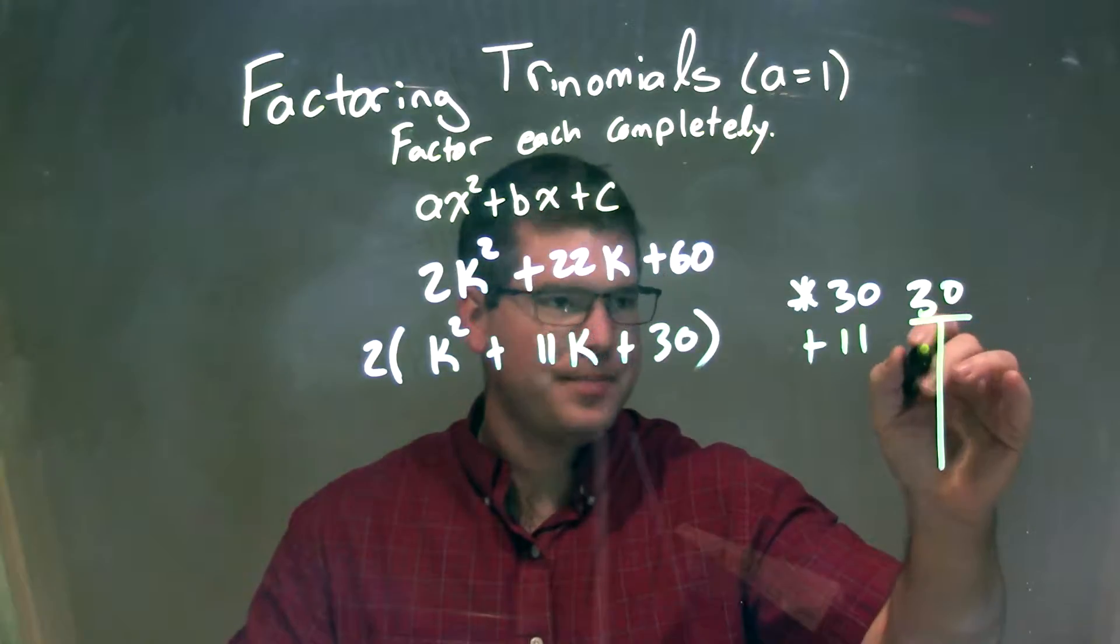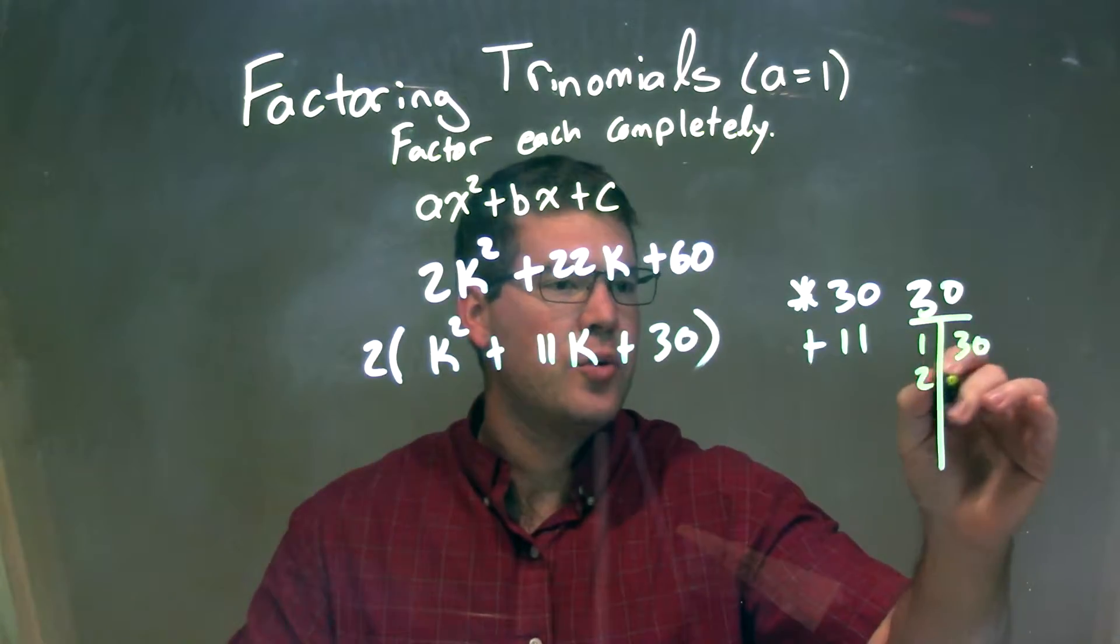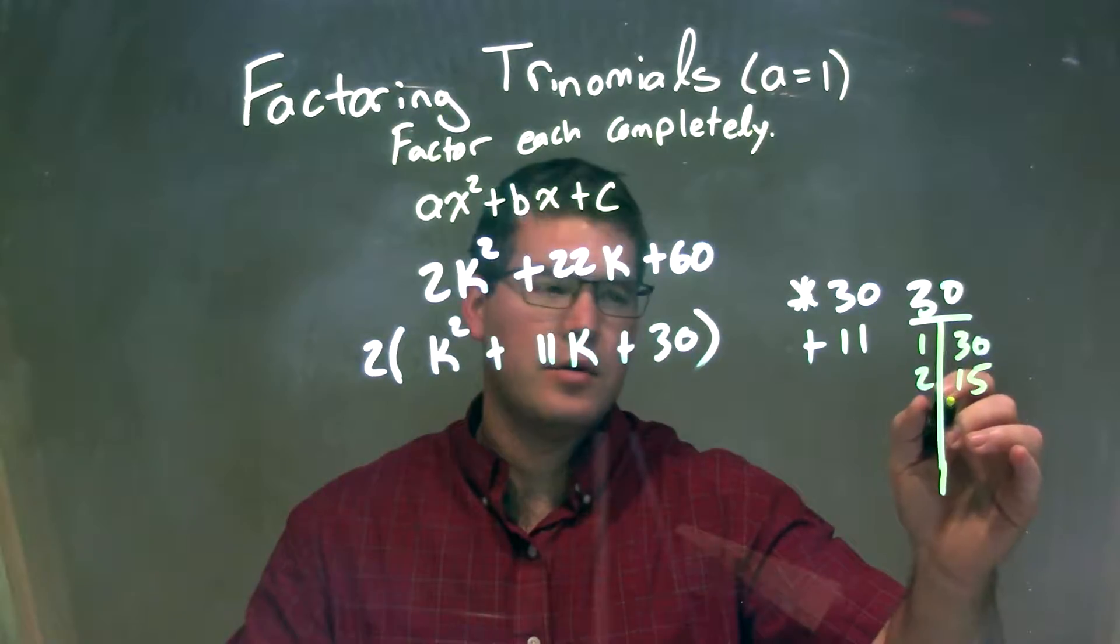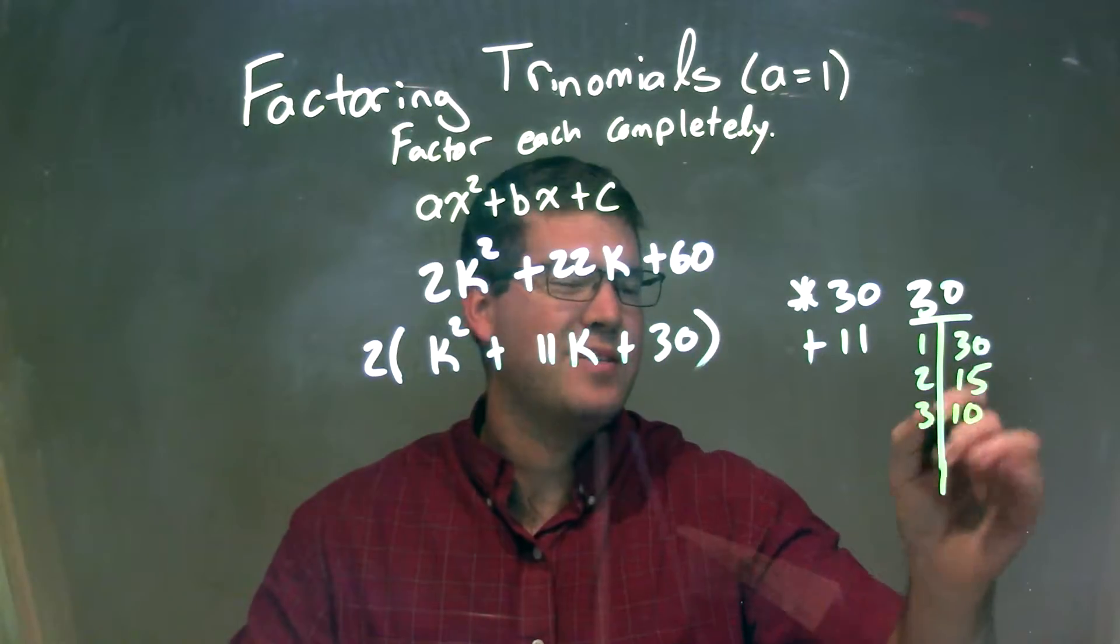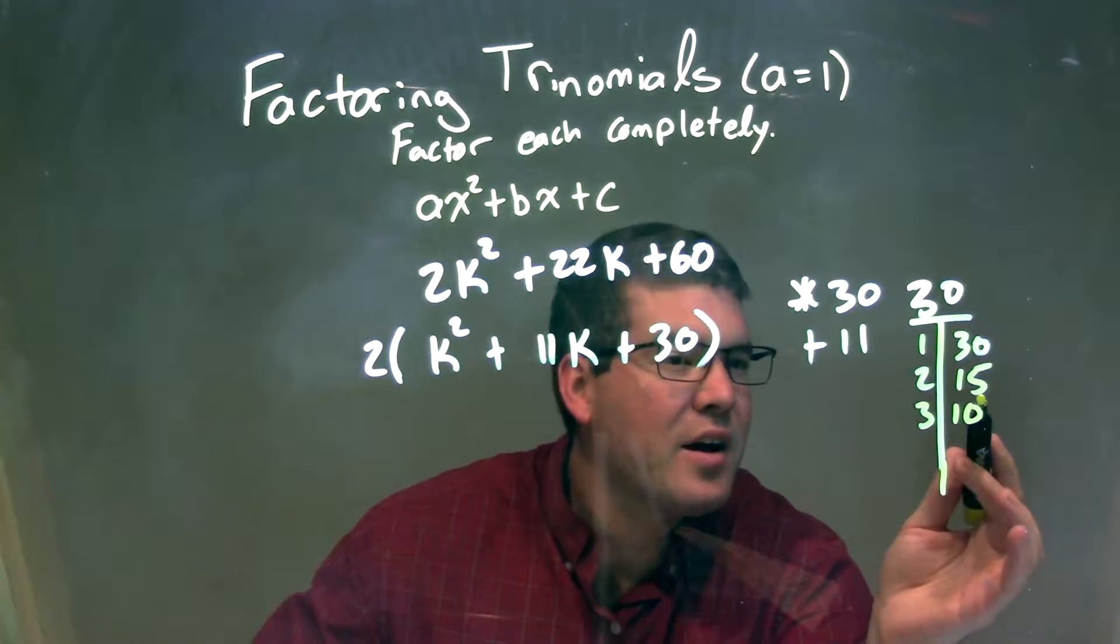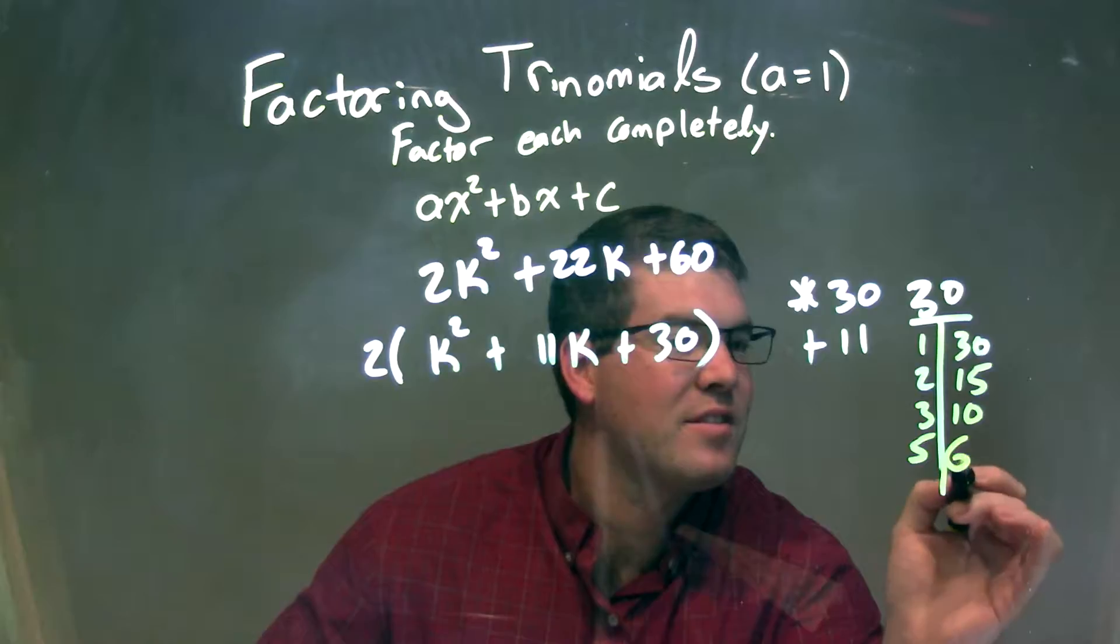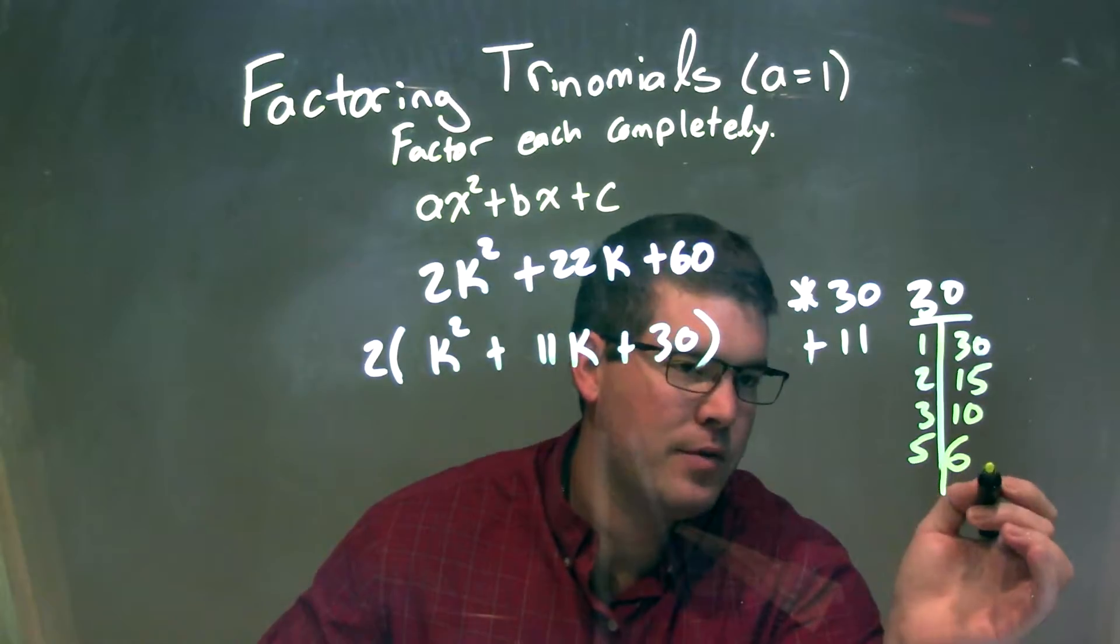What two numbers? 1 and 30, 2 and 15, 3 and 10, 4 does not go into 30, 5 and 6, and then at that point we just flip back.